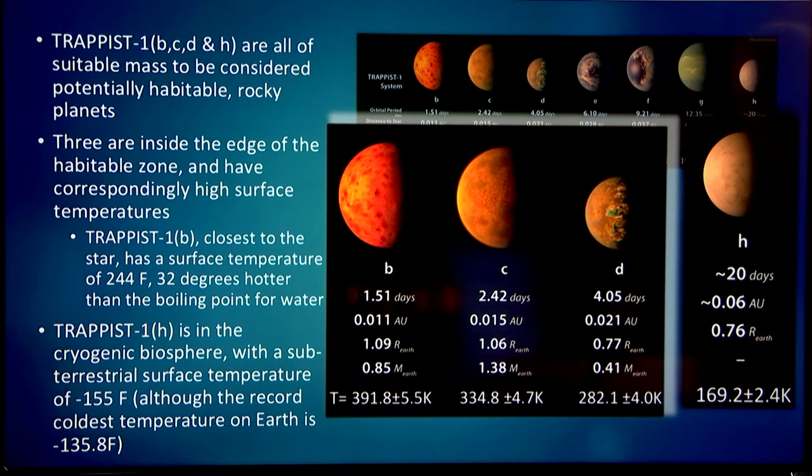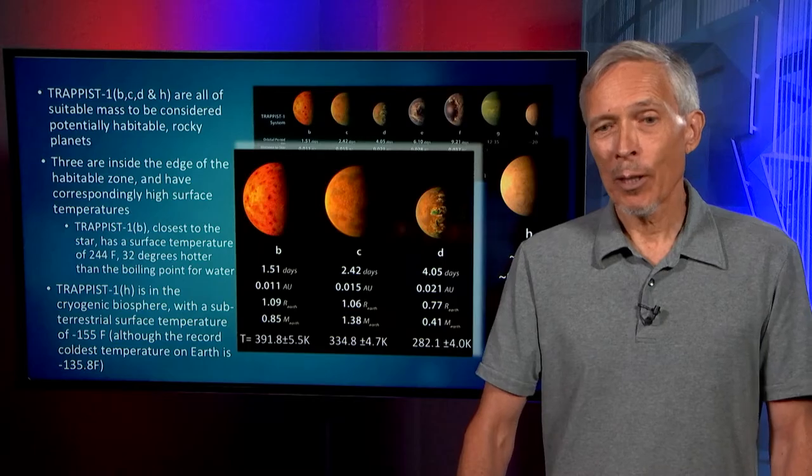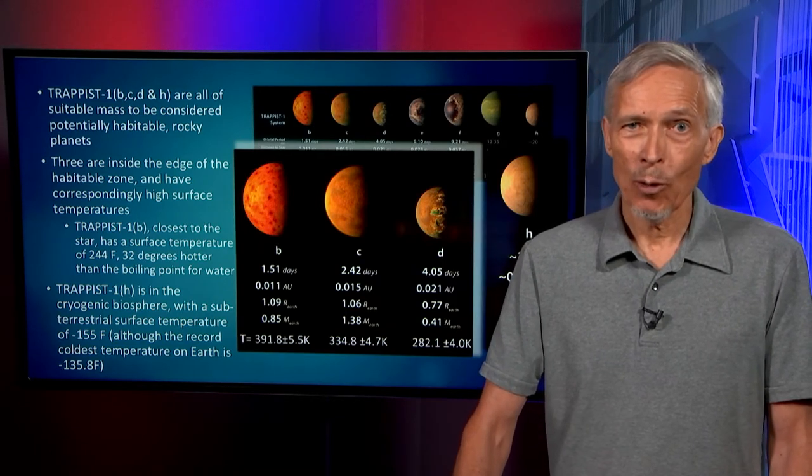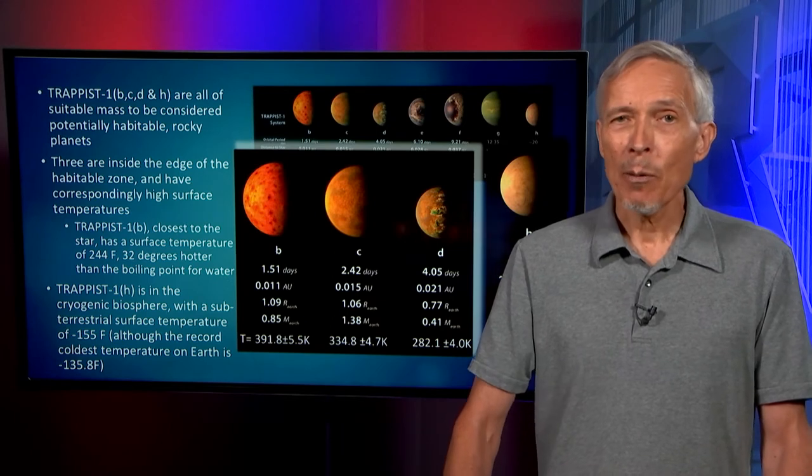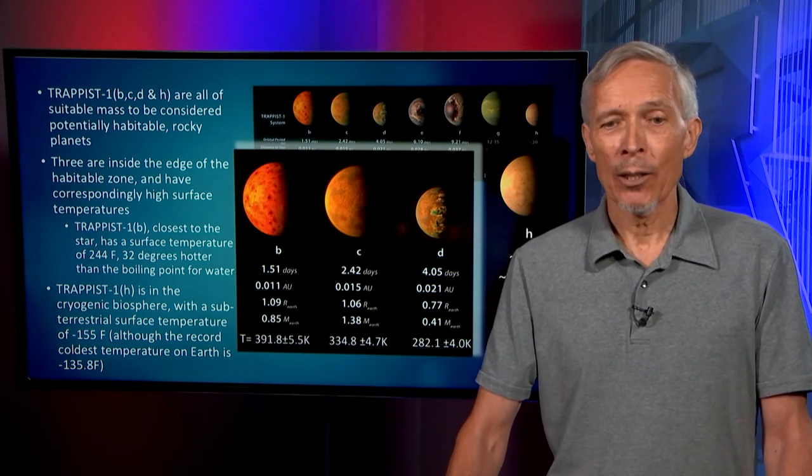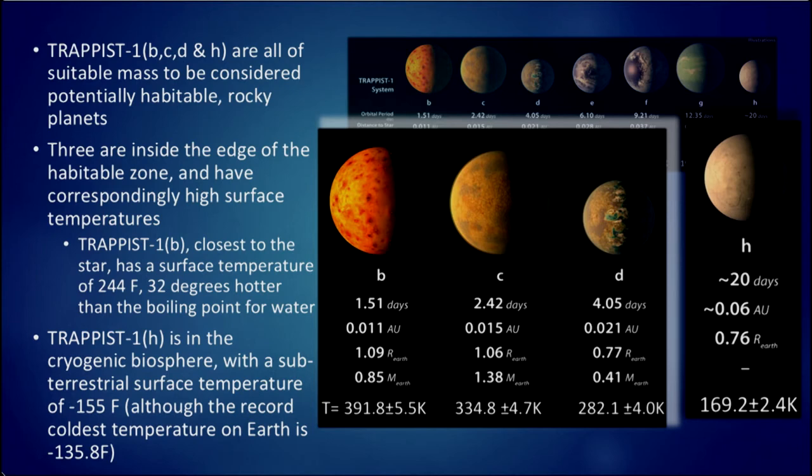Tantalizing, but interesting. And actually, on the Earth, there are biological microbial organisms that can exist in this temperature of superheated water. So that temperature alone does not rule out biology. TRAPPIST-1H is in the cryogenic biosphere, with a subterrestrial surface temperature of minus 155 degrees Fahrenheit.